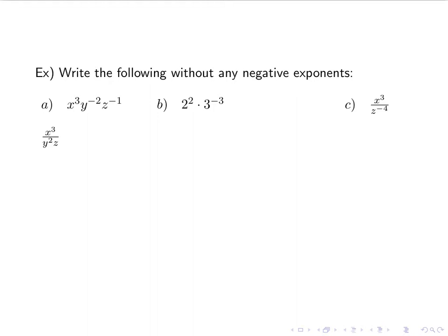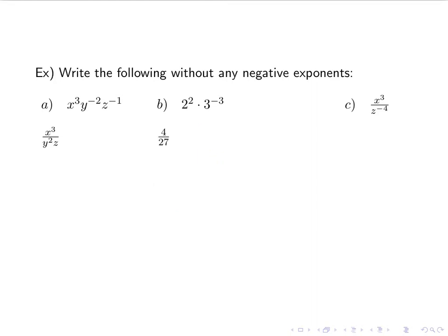For b, 2 squared — the exponent is positive so it stays. The negative 3 means I take 3 cubed and bring it down, then I can evaluate 2 squared and 3 cubed, and I end up with 4 over 27.